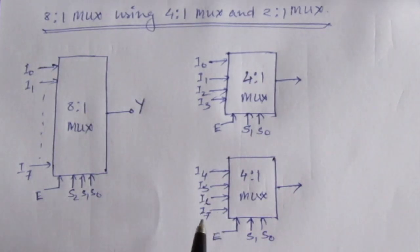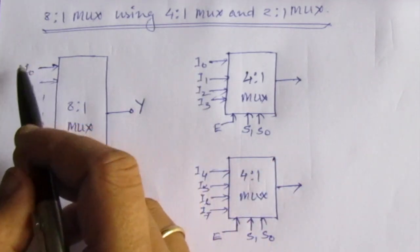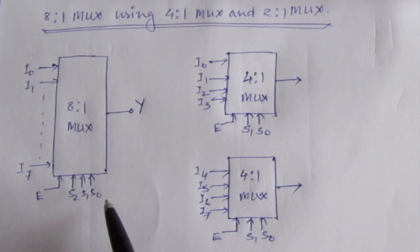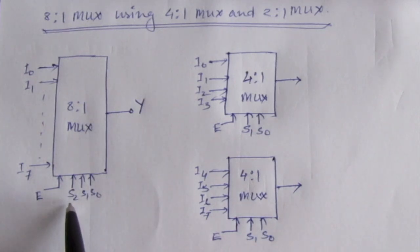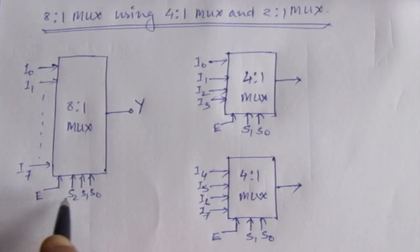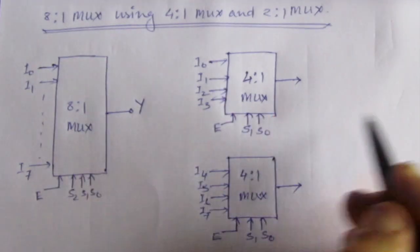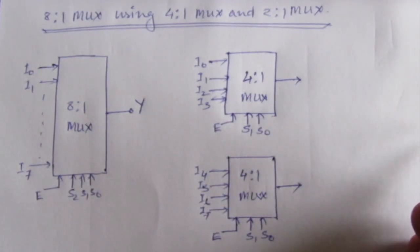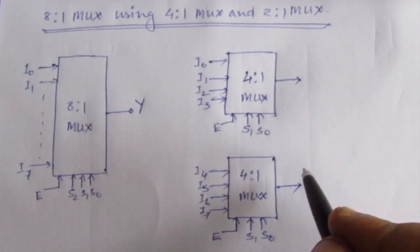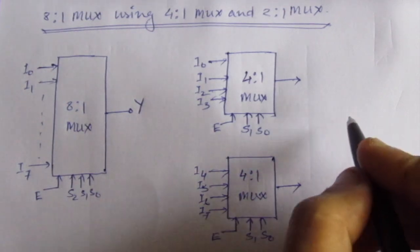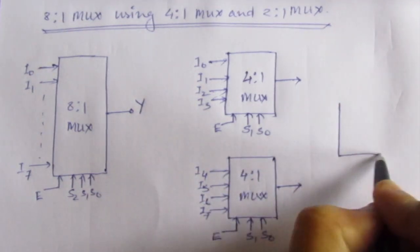Now we have matched the input ports to that of an 8-to-1 multiplexer, but one part is missing — we have not connected the S2 select line. We need a mechanism for the S2 input. Also, we currently have two output lines from the two 4-to-1 multiplexers, and we need to combine them into one output line. So we will need a 2-to-1 multiplexer.